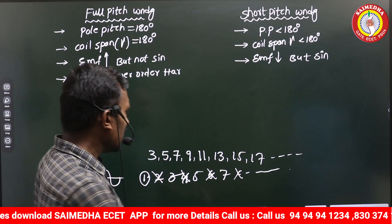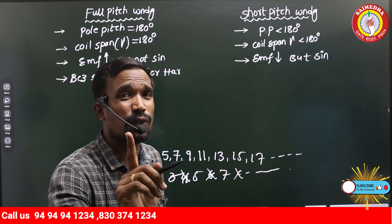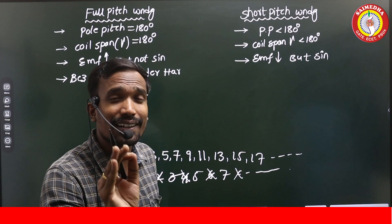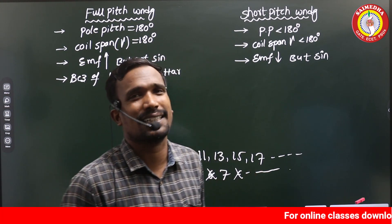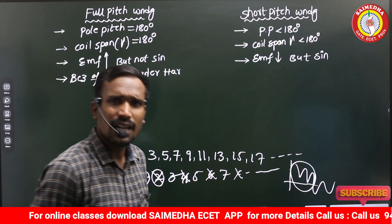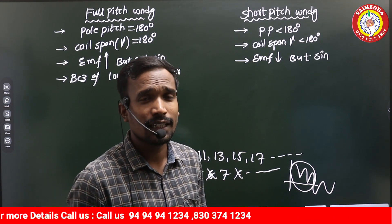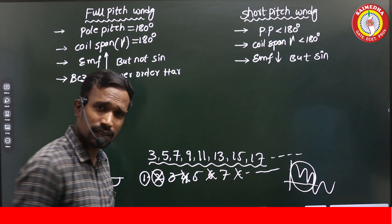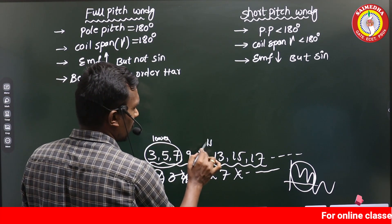Generally, we cannot get even harmonics except in transformers — that is a somewhat deeper concept related to magnetizing inrush currents. At switching transients, the waveform is unsymmetrical to the x-axis, so the second harmonic is the richest harmonic in that transient state only. Other than that, we cannot get even harmonics. So generally we have odd harmonics: the third, fifth, and seventh are called lower order harmonics, and the remaining are called higher order harmonics.